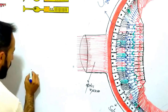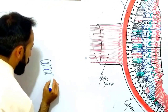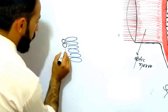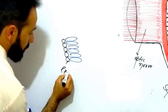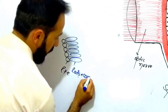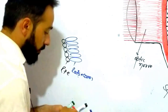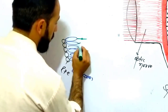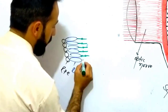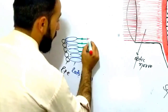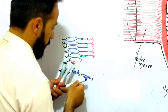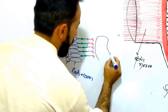Let me make a small diagram. These cells are your rods and cones. Behind the rods and cones is your retinal pigment epithelium. In front of the rods and cones are located the bipolar cells, and in front of the bipolar cells are the ganglion cells. The light from the vitreous body passes through these layers toward the rods and cones.